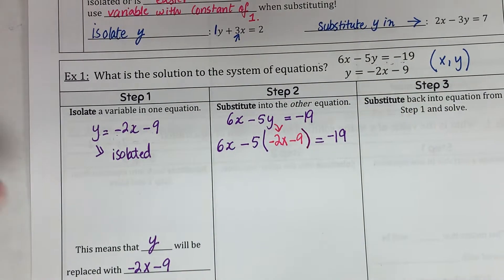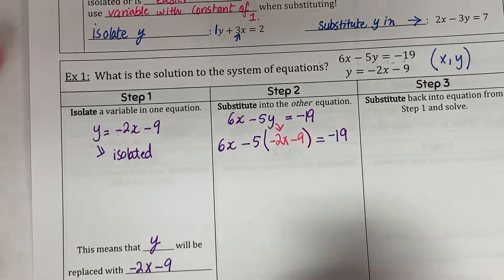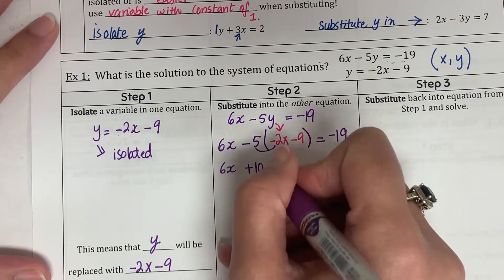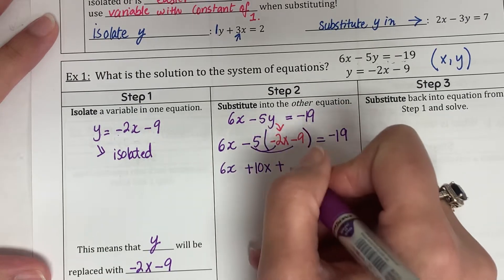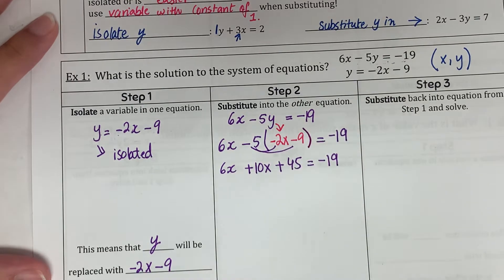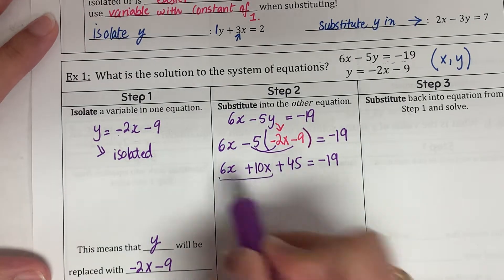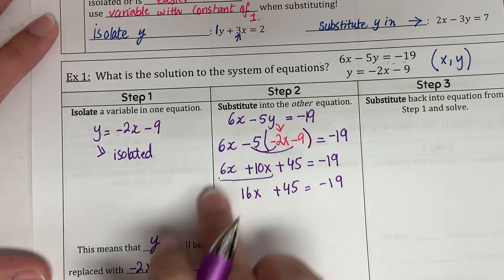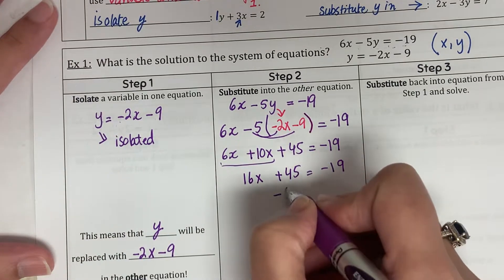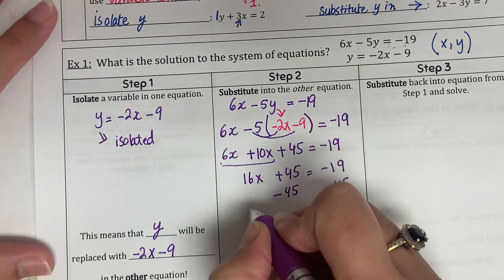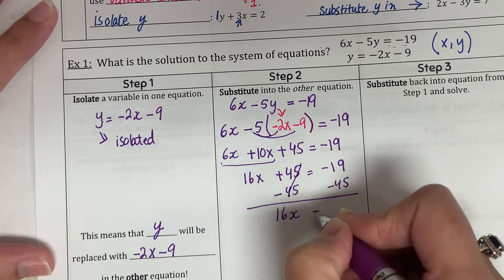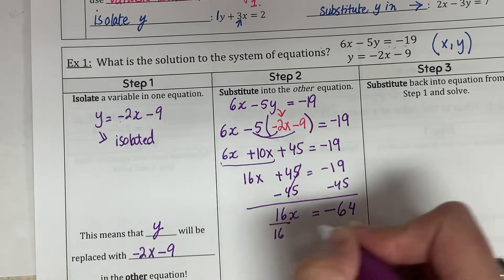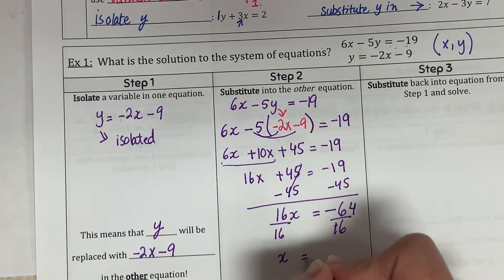Now solve for x. Distribute: 6x minus 5 times (−2x − 9) gives 6x + 10x + 45 = −19. Combine like terms: 16x + 45 = −19. Subtract 45 from both sides: 16x = −64. Divide by 16 on both sides: x = −4.